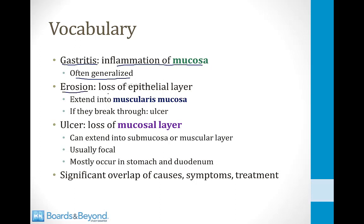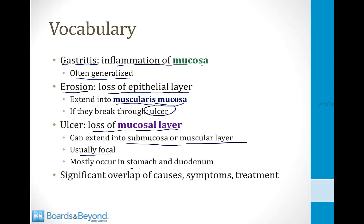An erosion is a loss of the epithelial layer of the mucosa of the stomach. It may extend into the muscularis mucosa, but importantly it does not break through the muscularis mucosa. If it breaks through, then that is an ulcer. An ulcer is an erosion or breakdown that has gone all the way through the mucosa layer, so that the stomach has lost a portion of the mucosa. It can extend into the submucosa or the muscular layer. It's usually focal, and these mostly occur in the stomach and duodenum.